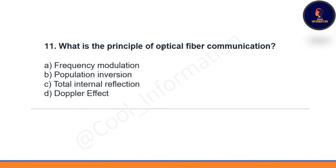What is the principle of optical fiber communication? Option A: frequency modulation. Option B: population inversion. Option C: total internal reflection. Option D: Doppler effect. Correct option is C — total internal reflection is the principle of optical fiber communication.